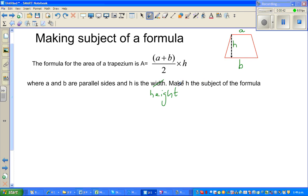Make h the subject of the formula. So what we want to do is - in this formula, A is the subject, you're writing A equals something. Instead of that, we want to write h equals something. So I'll write this first: A equals (a plus b) divided by 2 times h.